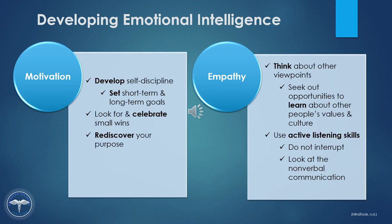Self-motivation is strongly impacted by your emotions. When you're distracted by your emotions, you might find it hard to see tasks through. Boost your motivation levels by developing self-discipline. Look for and celebrate the small wins — those simple jobs that, when completed, give you a sense of achievement. Set both short and long-term goals. When you decide what you want to achieve, you'll focus on what really matters to you. This can be highly motivating, especially when you connect personal goals with your career-related ones. If you're still struggling to get motivated, take some time to rediscover your purpose.